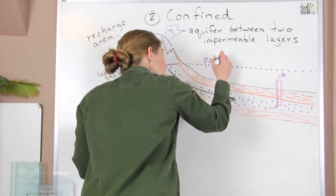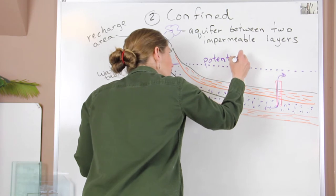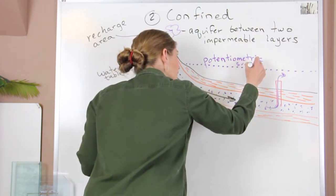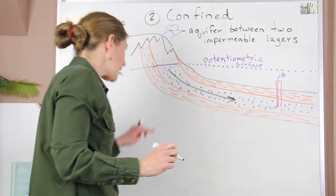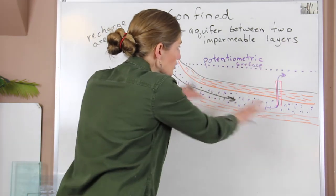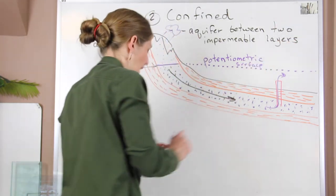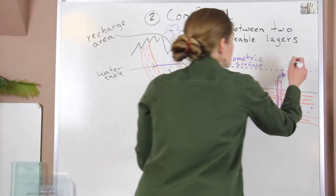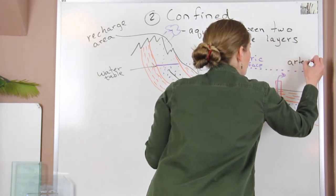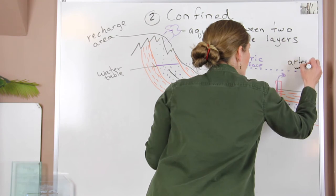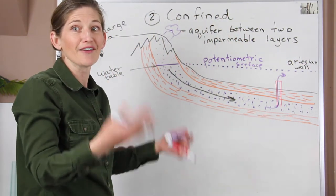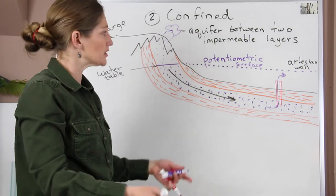And this surface here is called our potentiometric surface. And if we're below this surface and we put a well in here, there's so much pressure of that water pushing down that the water flows up and out. This special condition is called an artesian well, and it's a well where the water flows out without having to be pumped out of the well. It just flows naturally up and out because of that hydraulic pressure.